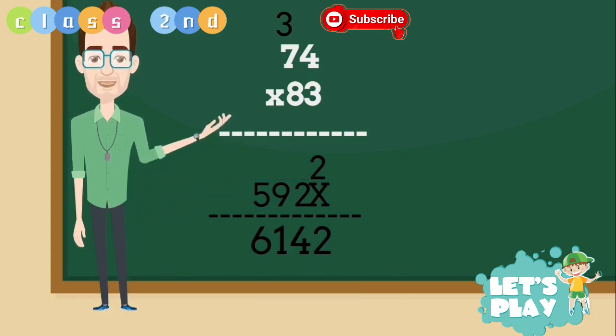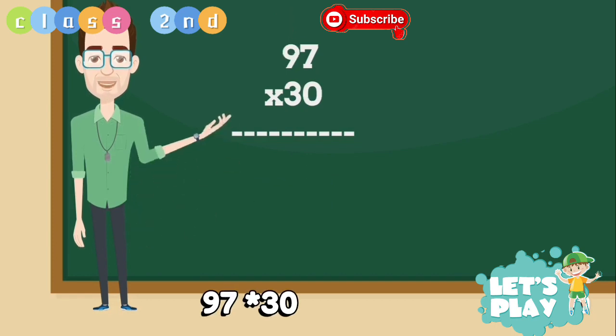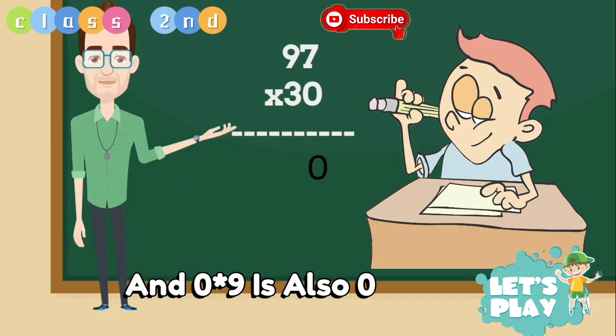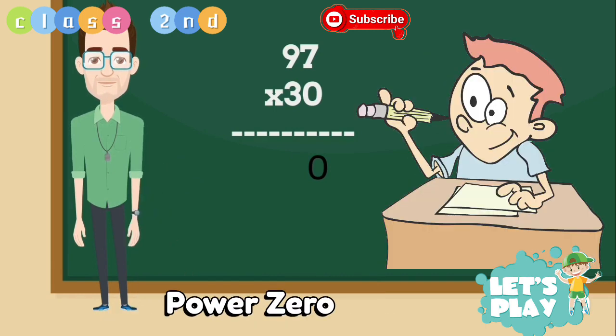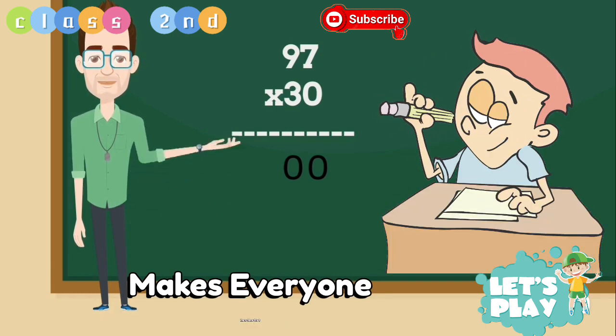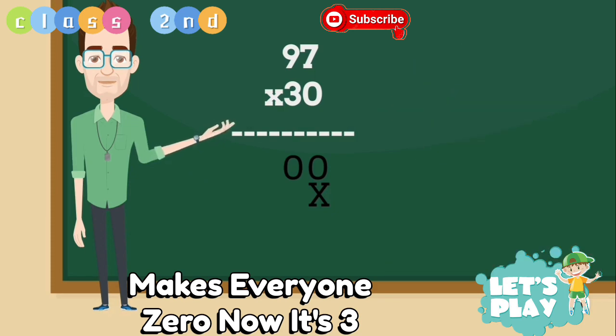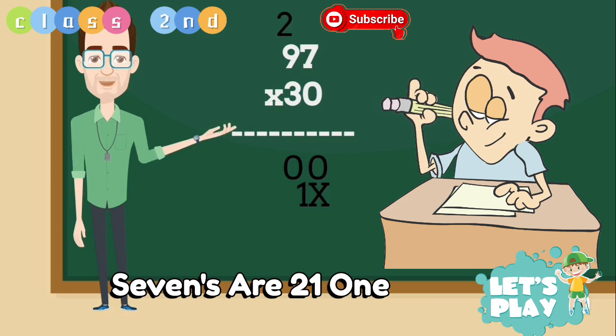Now move to second one, 97 multiplied by 30. I love 0's. 0 multiplied by 7 is 0 and 0 multiplied by 9 is also 0. Wow what a superpower. 0 makes everyone 0. Now it's 3 7's are 21.